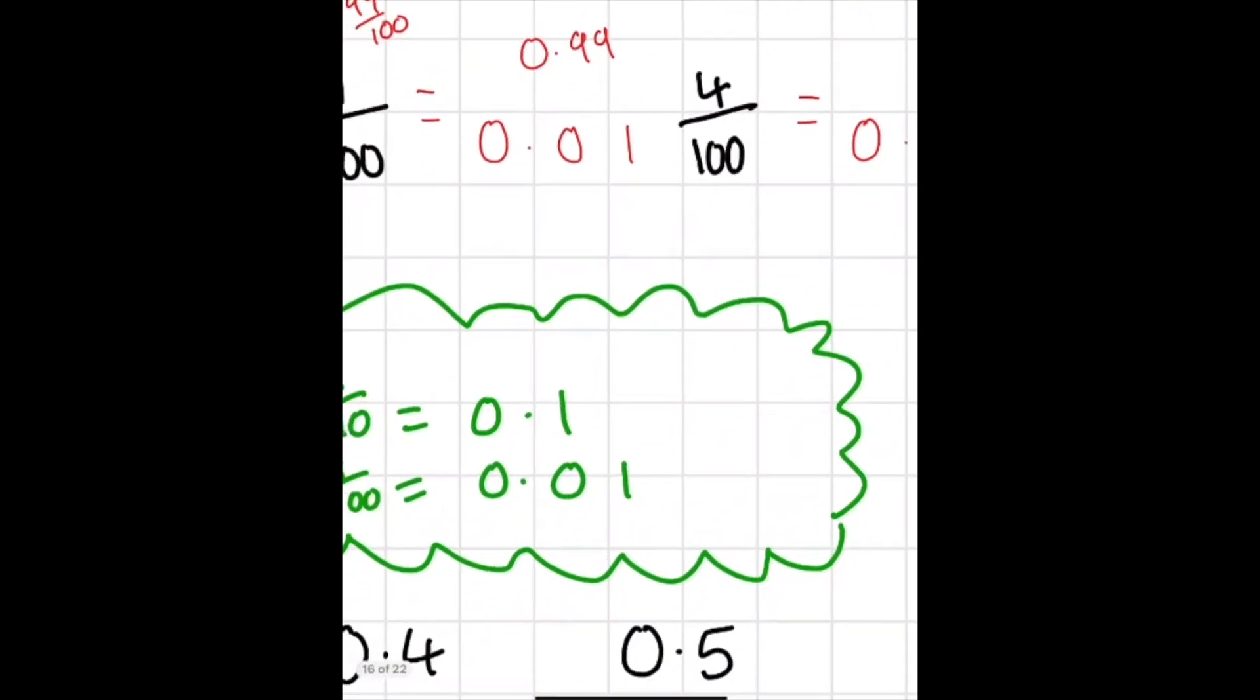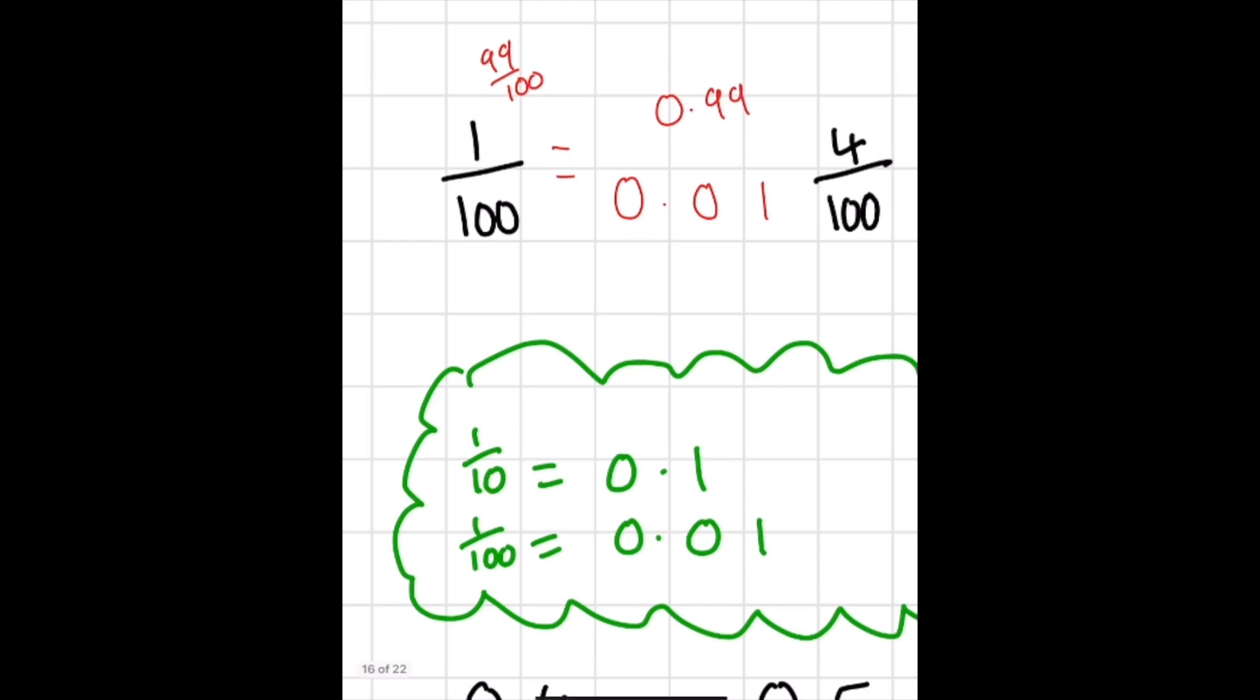What we are watching out for is that they are not mixing these two up. One tenth is zero point one as it takes ten to get to a whole. One hundredth is zero point zero one as it takes one hundred of these to get to the whole number.